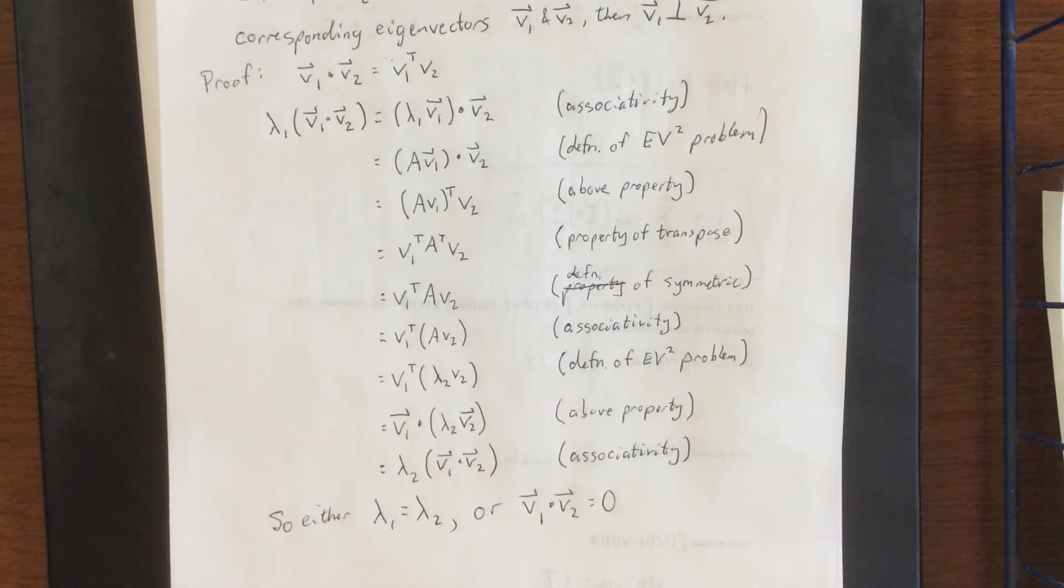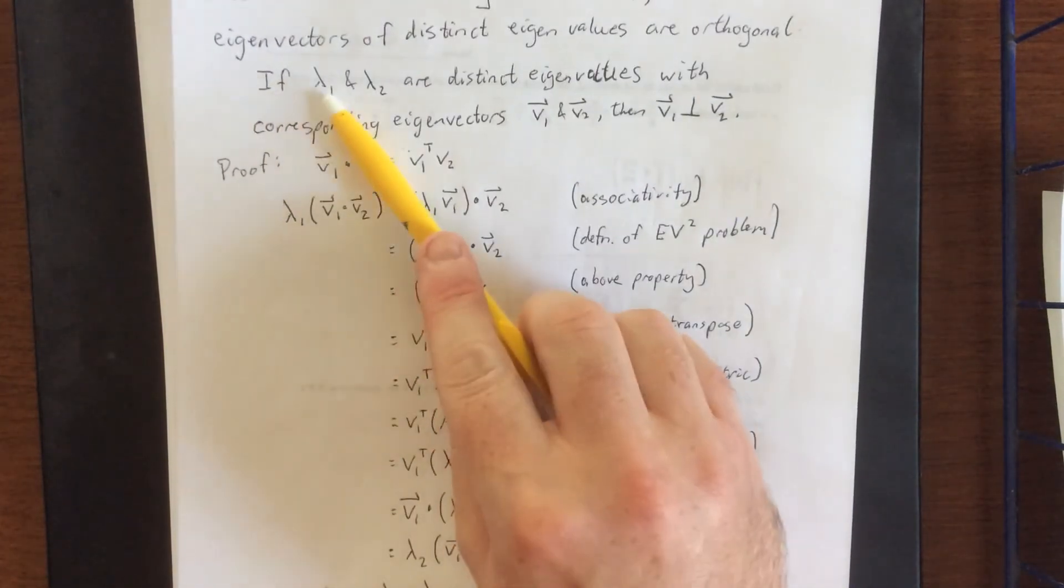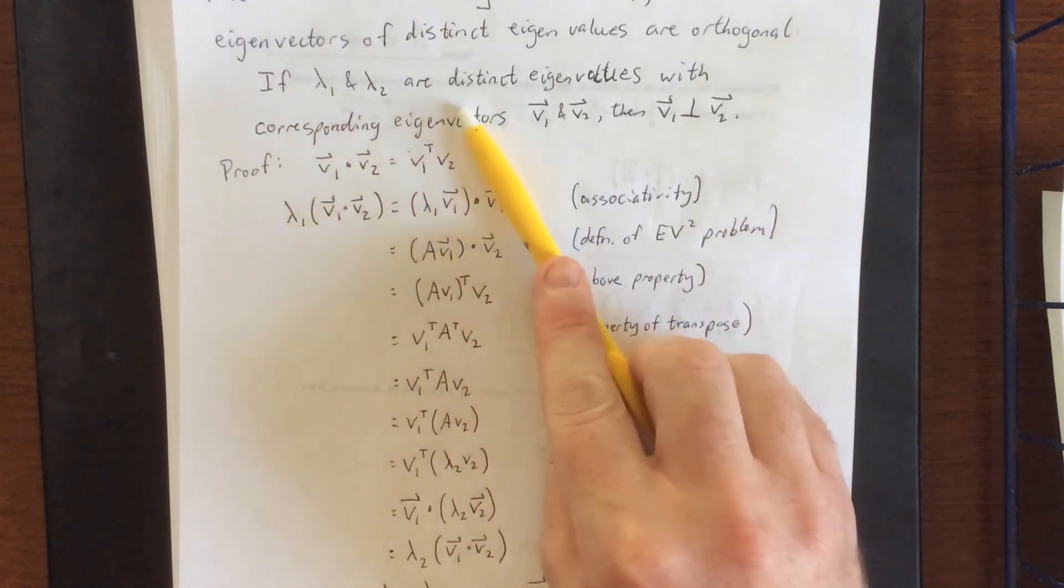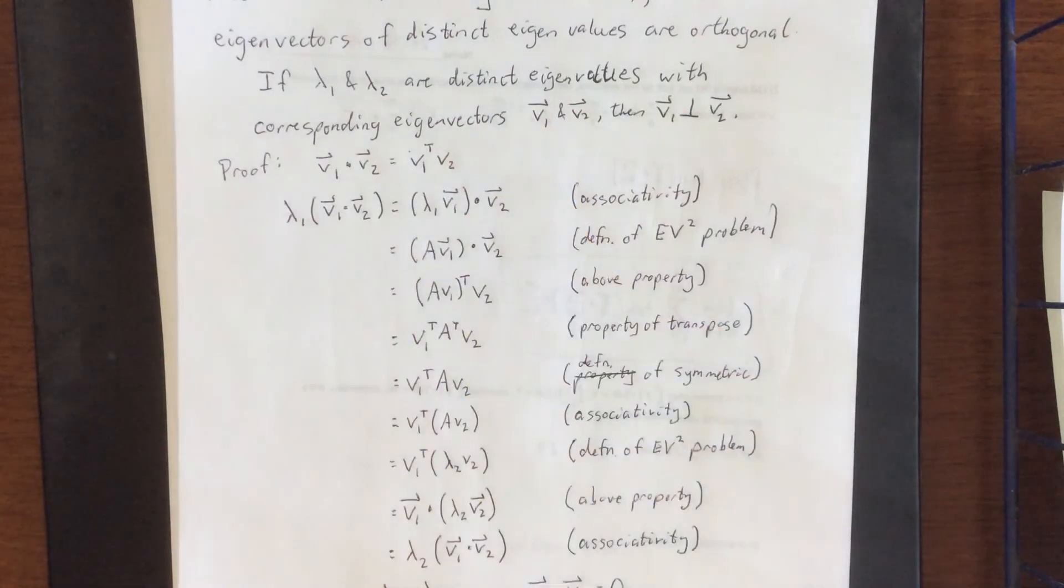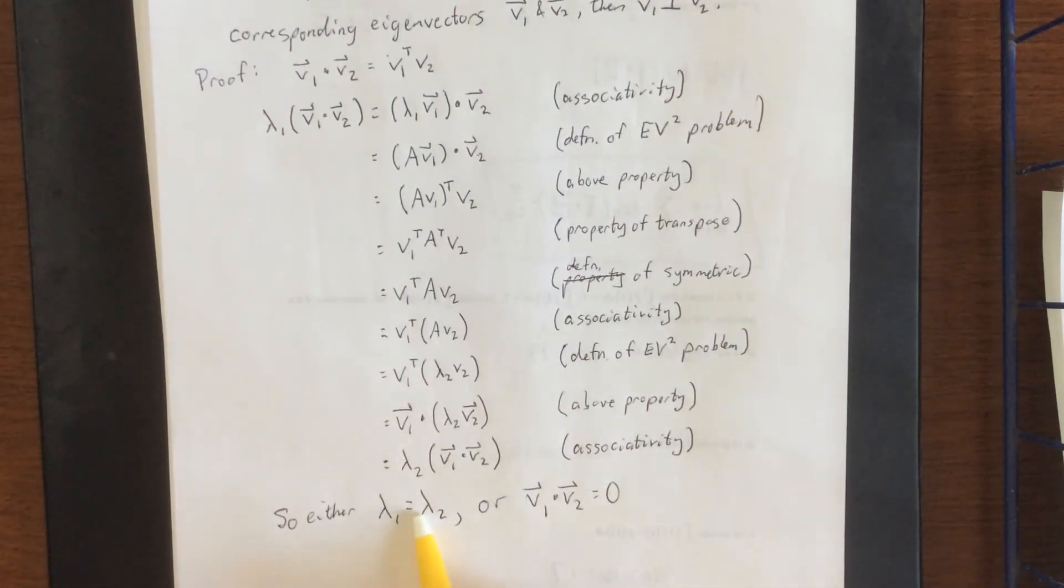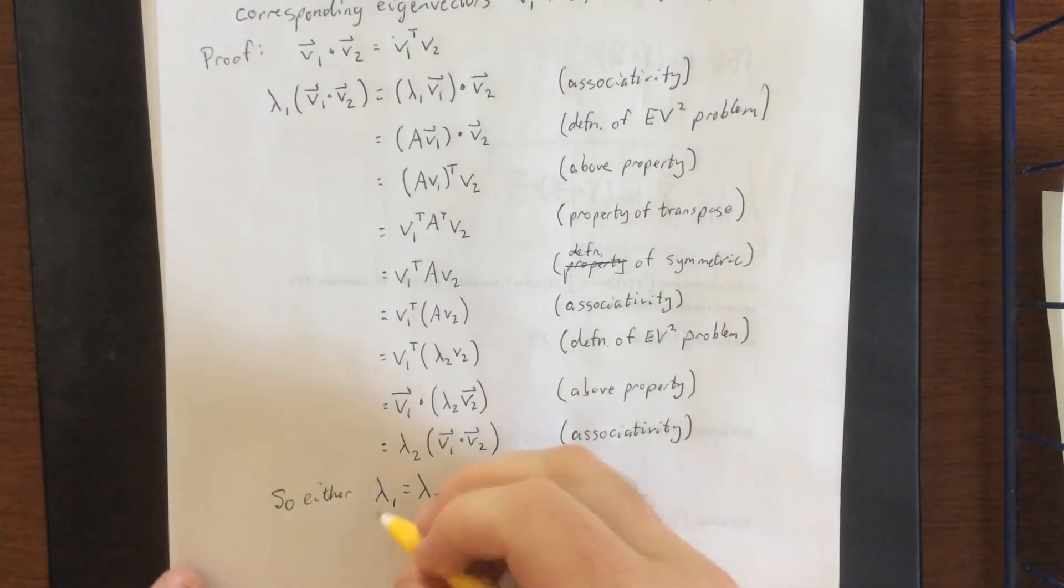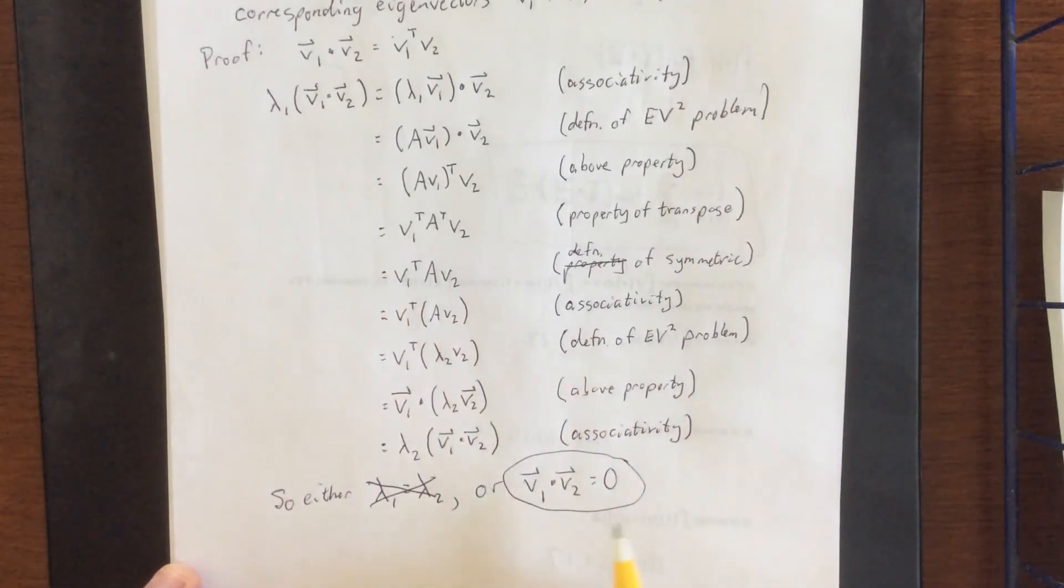Now with that in mind, let's take a look back at the beginning of the problem. One of the premises was if lambda 1 and lambda 2 are distinct eigenvalues. Well, if they are distinct eigenvalues, then that means that they can't be equal to each other. Which means that this is impossible. Which means that as long as they are distinct, it is guaranteed that they are orthogonal to each other.